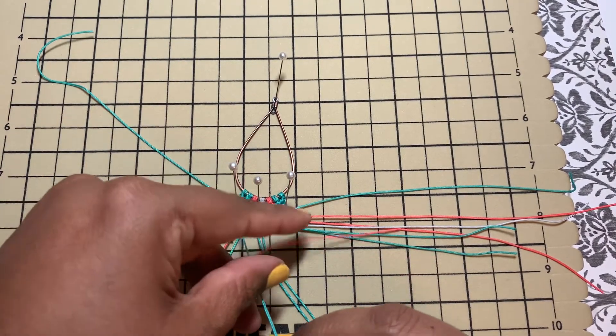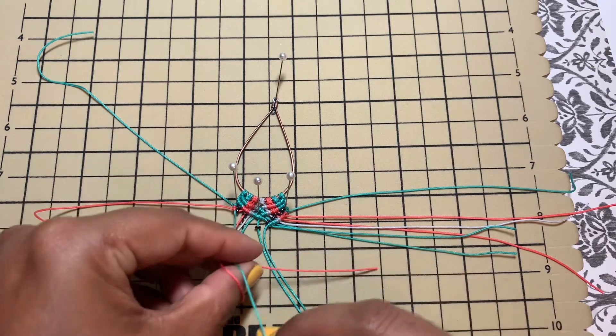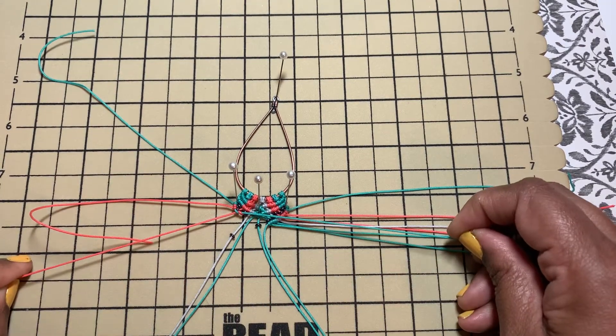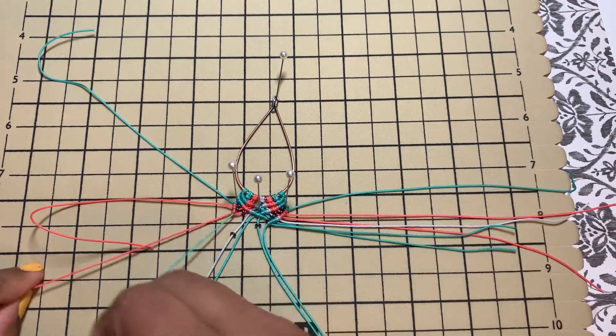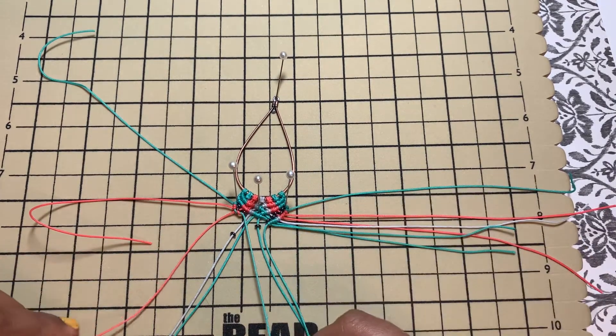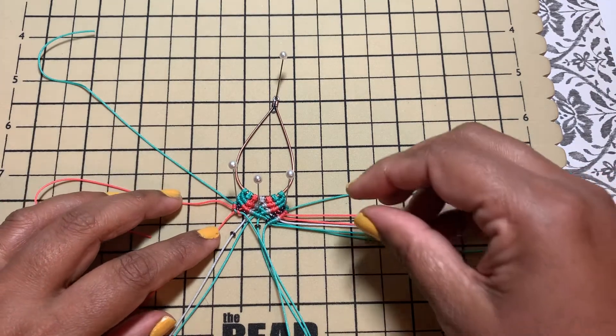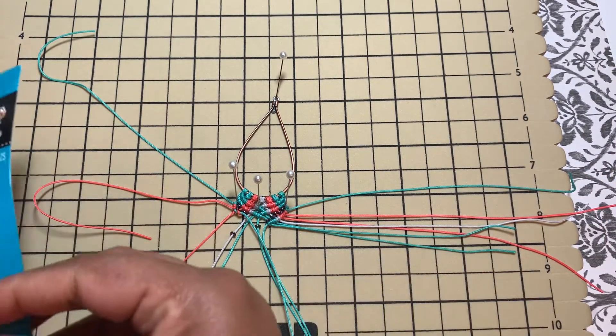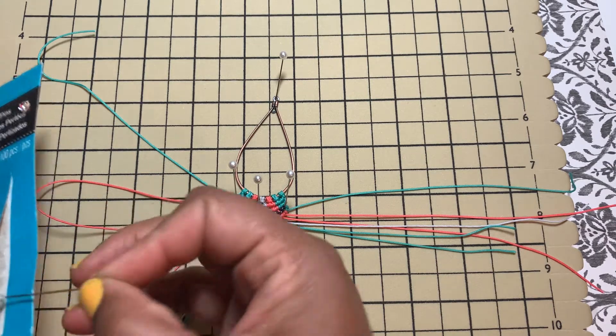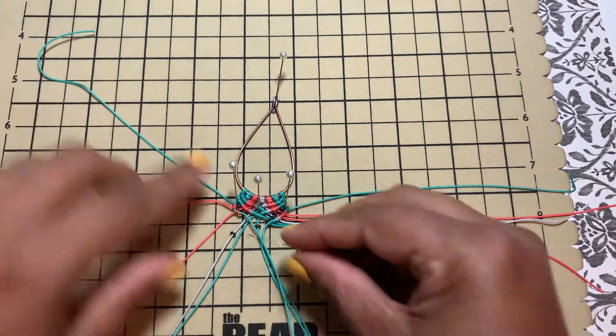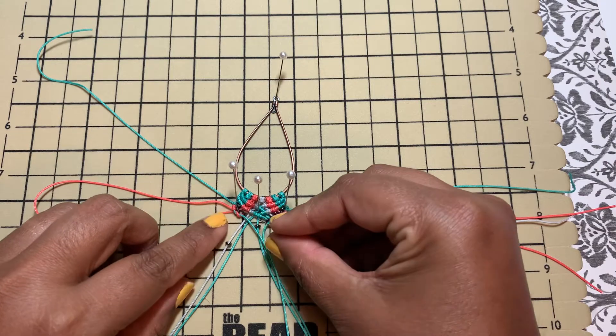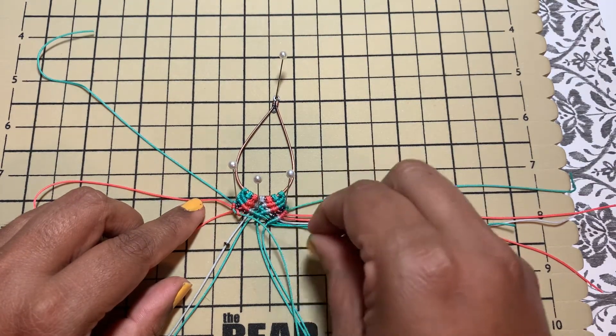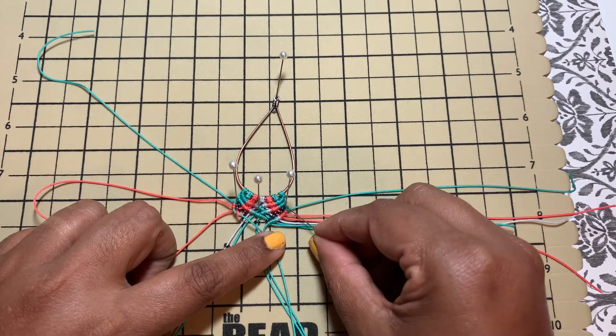I did one mistake here if you guys can see. Here there is only one knot of the green. I have to take all of these knots and fix that.